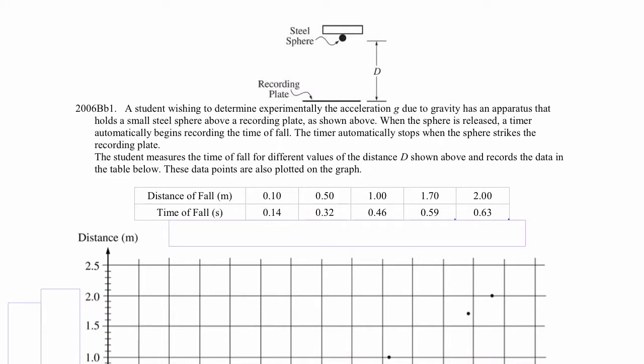A student wishing to determine experimentally the acceleration g due to gravity has an apparatus that holds a small steel sphere above a recording plate, as shown above. When the sphere is released, a timer automatically begins recording the time of fall. The timer automatically stops when the sphere strikes the recording plate. The student measures the time of fall for different values of distance d, shown above, and records the data in the table below. These data points are also plotted on the graph.